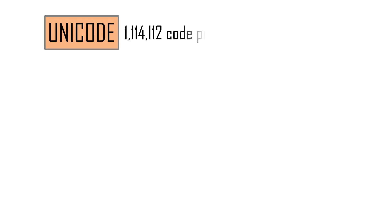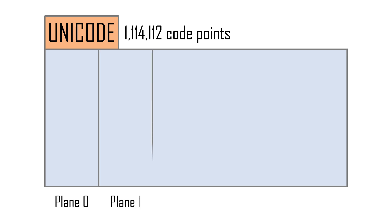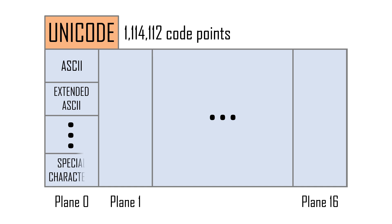Unicode is large enough to support 1,114,112 code points. The Unicode set is divided into 17 areas called coding planes, each with 65,536 code points. These sets are even further divided into variable length coding areas called blocks, each of which has its own unique purpose.